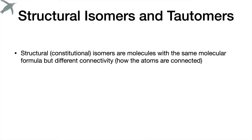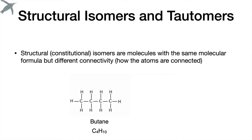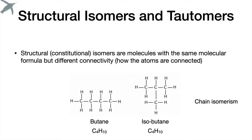First, we have to understand what structural or constitutional isomers are. They're molecules with the same molecular formula, but they're connected differently. For example, here's butane — C4H10. And here is isobutane, also C4H10. So the number of carbons and hydrogens is the same, but the structure is different. This is an example of chain isomerism.